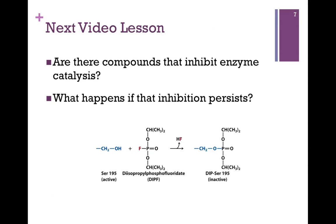So these were all good examples of how there might be enzymes that do not obey Michaelis-Menten kinetics. In our next lesson, we want to see whether there are compounds that can inhibit enzyme catalysis, and what happens if that inhibition persists.